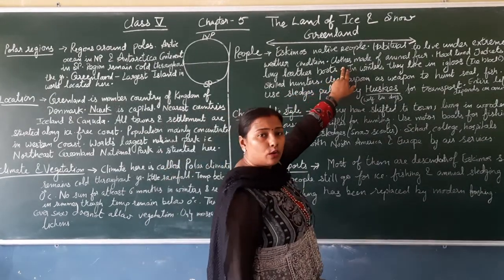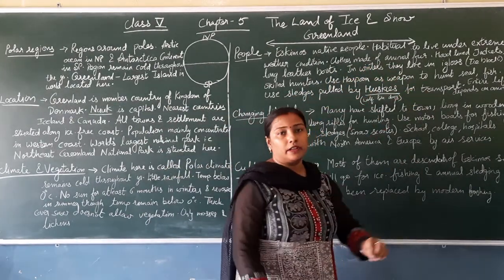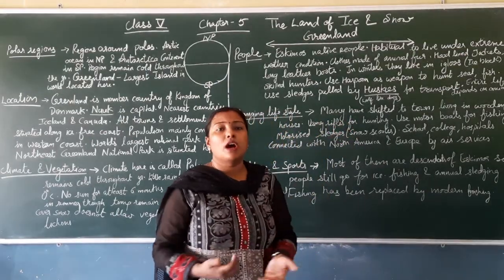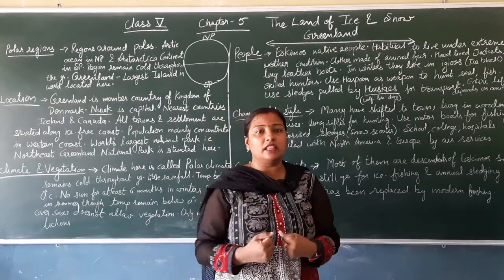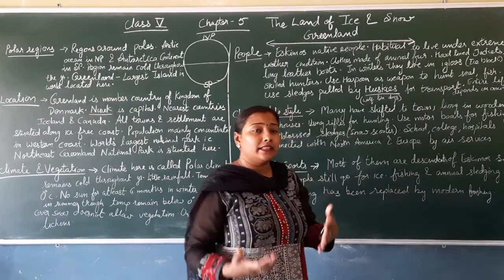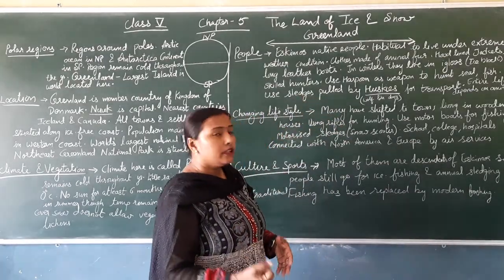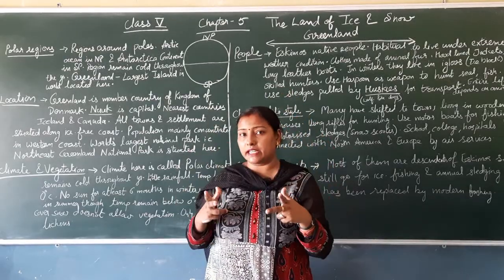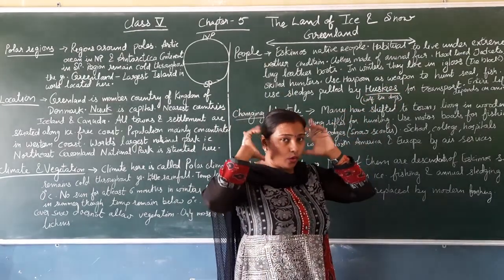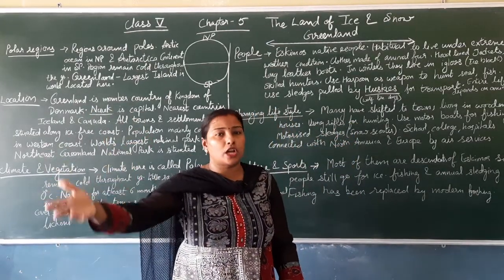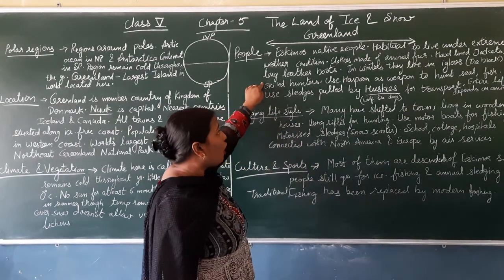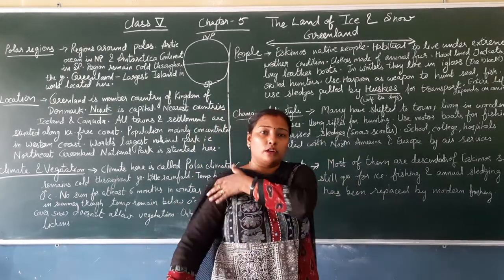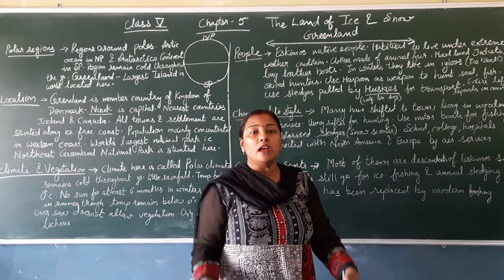Their clothes are made of animal fur. Animals like polar bears, walruses, and seals have natural thick skin suited to the cold — Eskimos make their clothing from these animal furs. They wear hood-lined jackets to protect themselves. They also wear long leather boots so that they don't get frostbite, because at below zero degree temperatures, wearing cotton clothes would cause frostbite and death.